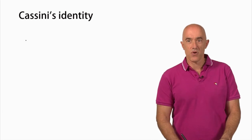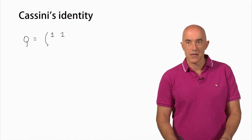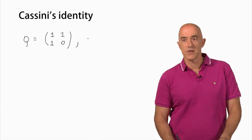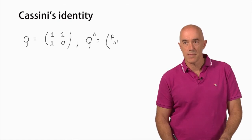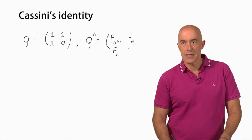So let's recall what the Q matrix is. The Q matrix was this two-by-two matrix that had elements 1, 1 in the first row and 1, 0 in the second row. And the interesting result we derived was seeing what it looks like when you raise it to the nth power — that gives F(n+1), F(n), F(n), F(n-1).